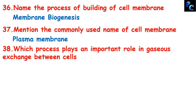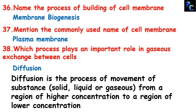Which process plays an important role in gaseous exchange between cells? The process is called diffusion. Diffusion is the process of movement of a substance — and note, in osmosis it is the movement of water, but in diffusion it is the movement of any substance, whether solid, liquid, or gaseous, from a region of higher concentration to a region of lower concentration.